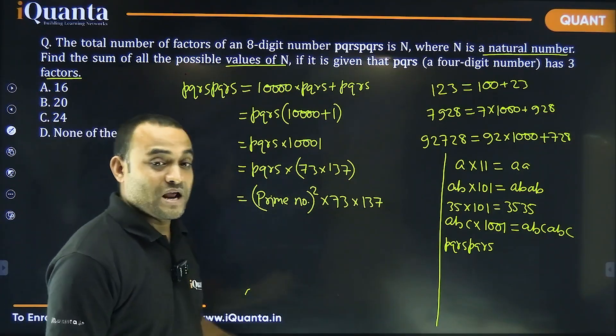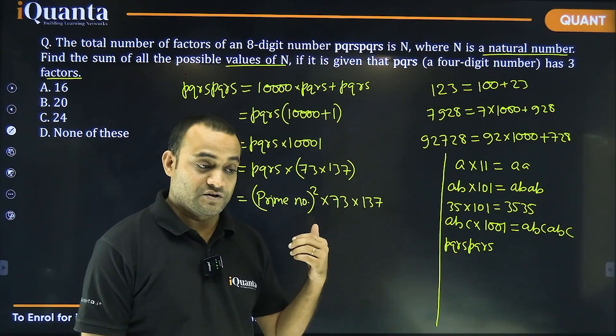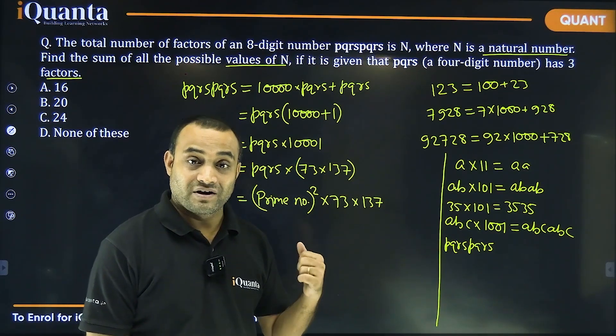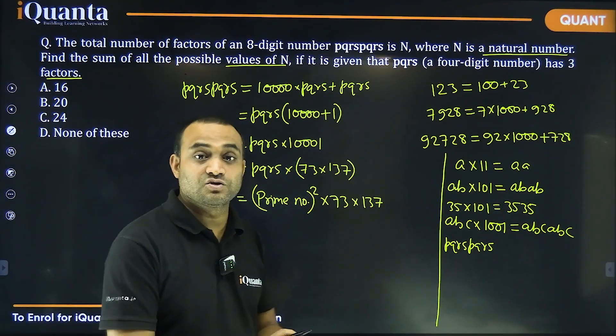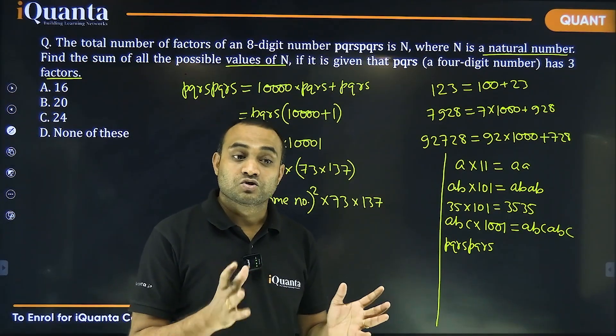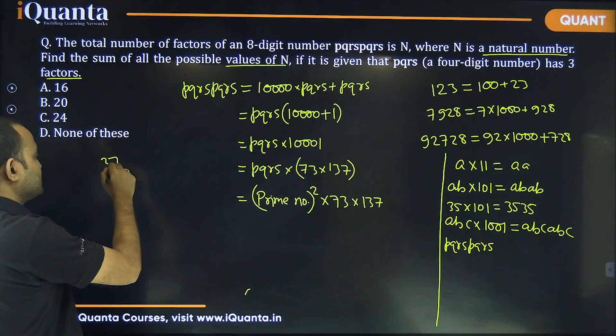And the smallest prime number whose square is a four digit number, if you think, it will be 37. Because 31 square is 961, 32 square is 1024. So, after that, prime number 37. And what is 37 square?